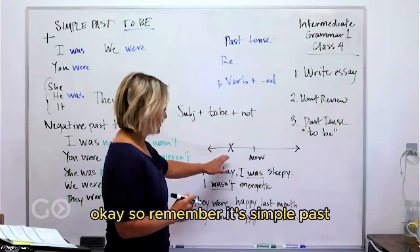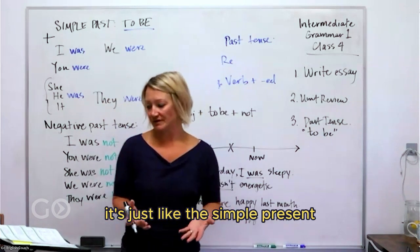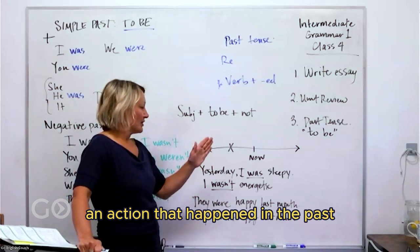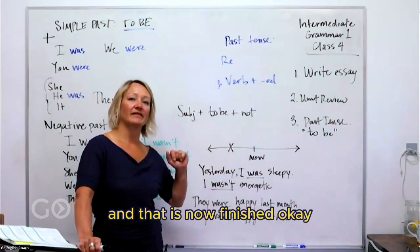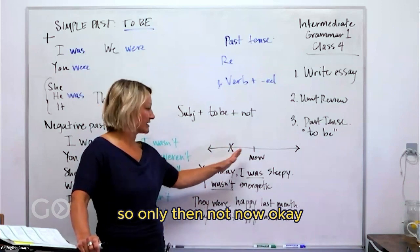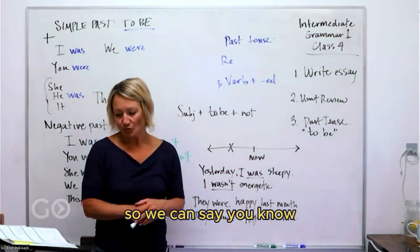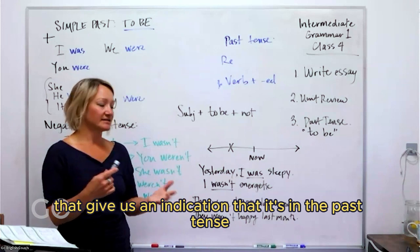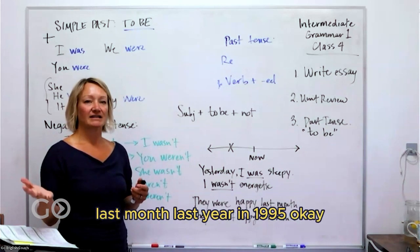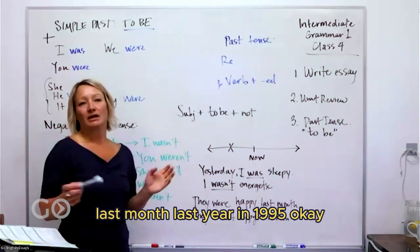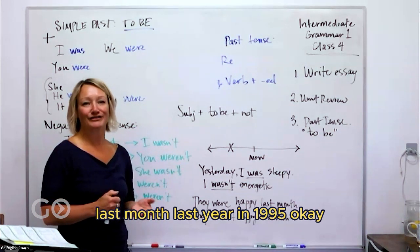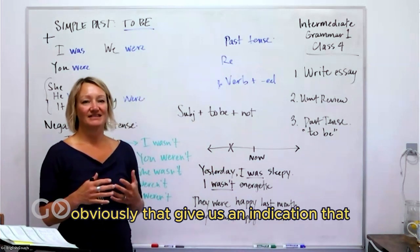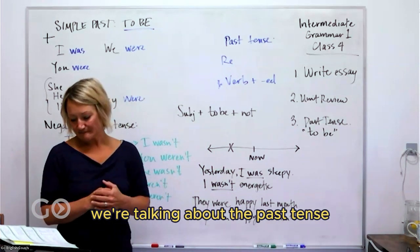So remember, it's simple past. It's just like the simple present, it's just kind of - we use simple past as an action that happened in the past and that is now finished. Only then, not now. So we can say, you know, these kinds of words that give us an indication that it's in the past tense, like: yesterday, last week, last month, last year, in 1995, 500 years ago. Those are all things obviously that give us an indication that we're talking about the past tense.